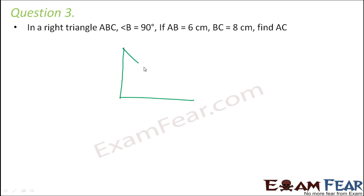So let's say that this is a right angle triangle. So just a rough diagram. This is angle B which is 90 degree. Let's call this as A and this is C. So AB is given as 6 cm, BC is given as 8 cm and we have to find out the length of AC.